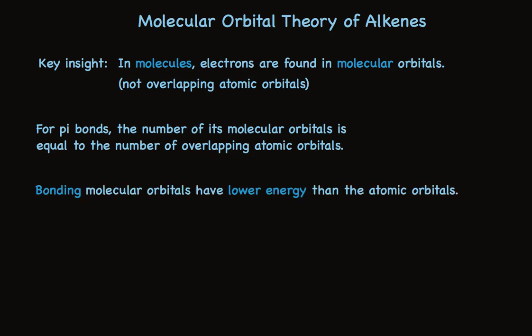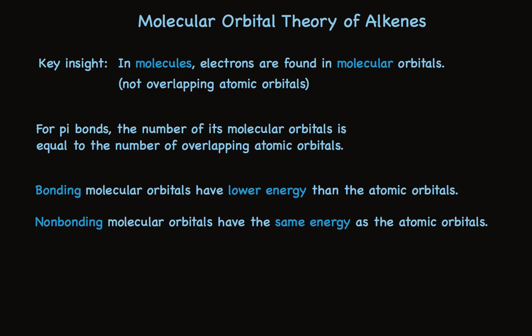And thirdly, there are three types of molecular orbitals in terms of their energetics. One type is called bonding. These are lower energy than the standard p orbitals that are overlapping. There are non-bonding molecular orbitals, and they have the same energy as the p orbitals that are overlapping and don't really contribute to bonding. And the third are higher energy, and these actually destabilize the molecule if there are electrons in the antibonding orbitals.